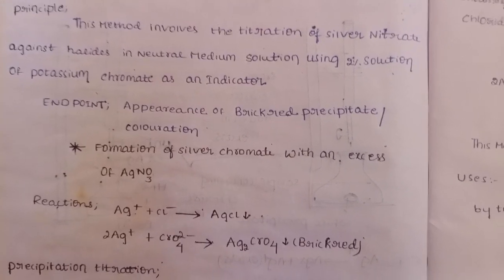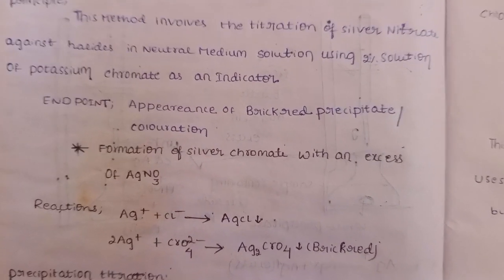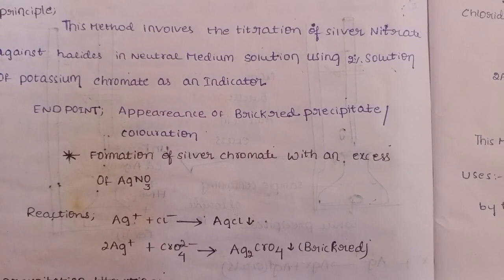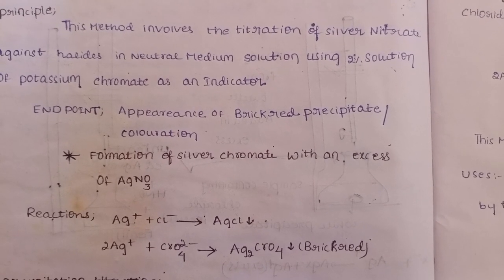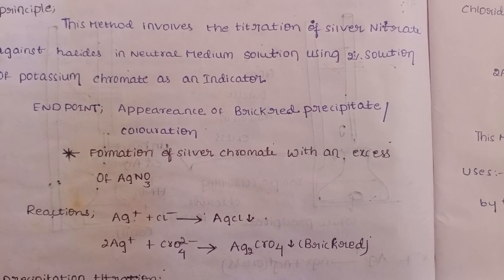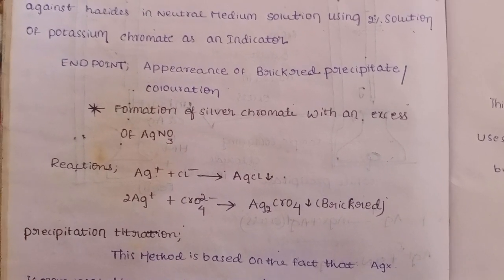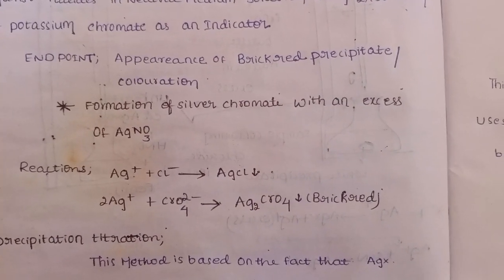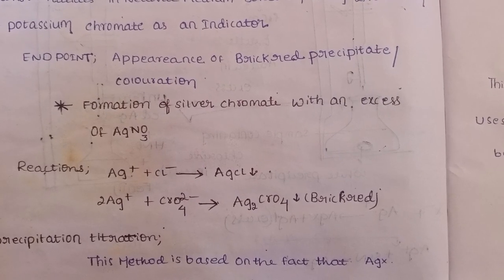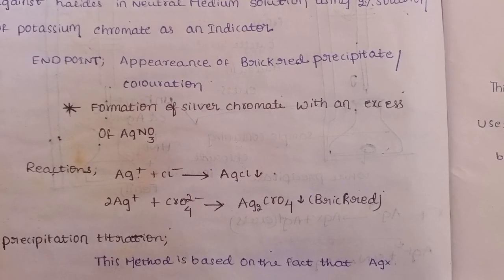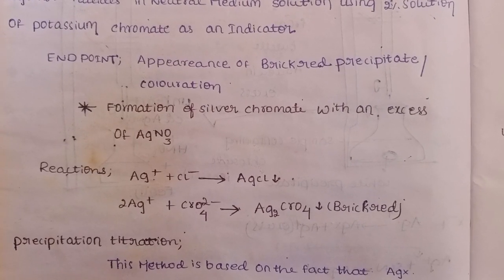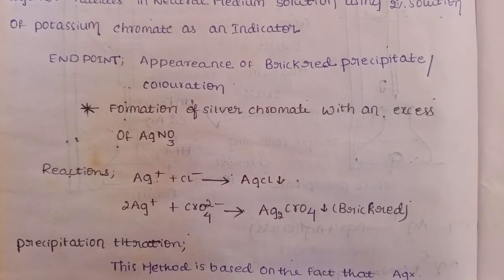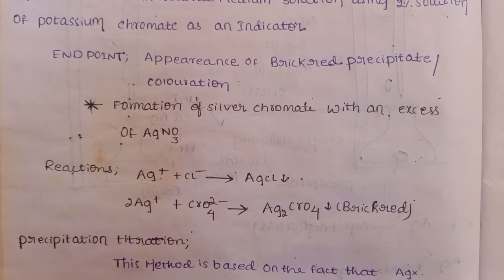The indicator is potassium chromate, used at 2%. The endpoint is indicated by the appearance of brick red precipitate due to coloration - a precipitation reaction is formed. In previous videos about Volhard method, we used potassium thiocyanate or ammonium thiocyanate.